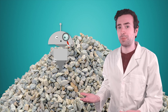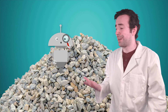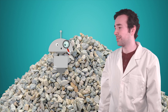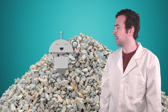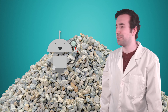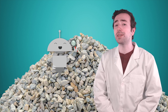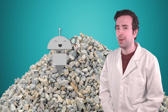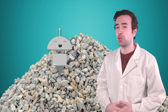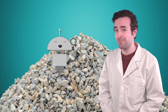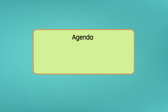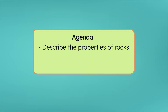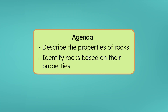Now we have all these rocks, but we have no idea what we're looking at. Right now they're just, well, rocks. Great idea, Mia! If we can learn how to identify these rocks, I bet we can unlock their stories. Alright scientists, ready to solve the mystery of these rocks? By the end of today's lesson, you'll be able to describe the properties of rocks and use those properties to identify them. Let's investigate!